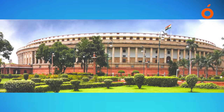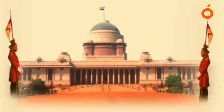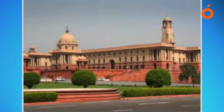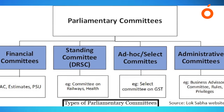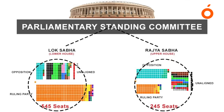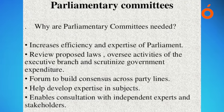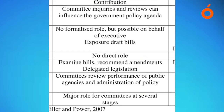The Department-related Standing Committees consider national basic policy documents presented to the Houses and report on them if referred by the Chairman or Speaker. These committees are explicitly prohibited from considering matters of day-to-day administration. Each committee consists of not more than 45 members — 30 nominated by the Speaker from Lok Sabha and 15 nominated by the Chairman from Rajya Sabha. A member who is a minister shall not be nominated or continue as a member. The chairmen of six committees — Finance, Commerce, Home Affairs, Human Resource Development, Industry, Science and Technology, and Transport and Tourism — are appointed by the Chairman, while chairmen of the remaining eleven committees are appointed by the Speaker.